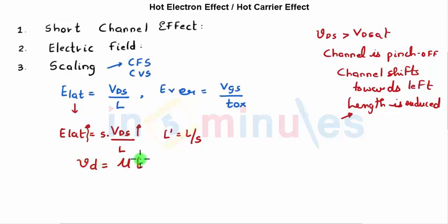Drift velocity is given by mobility times E_lateral — a relation we studied during velocity saturation. As E_lateral keeps increasing, the drift velocity of the electrons keeps increasing. When electrons move with very high velocity, their kinetic energy, which is directly proportional to velocity, increases drastically.